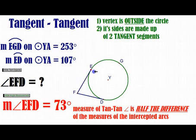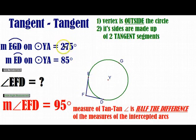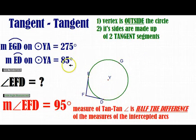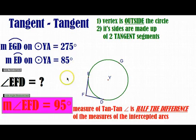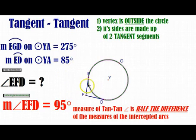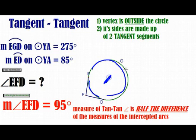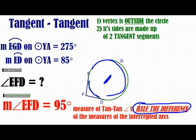Here's one more example. With arcs of 275 and 85: 275 minus 85 equals 190, and half of 190 is 95. So the measure of the tangent-tangent angle is 95 degrees. Secant-secant: half the difference. Tangent-tangent: half the difference.